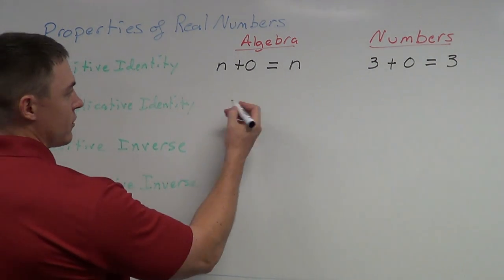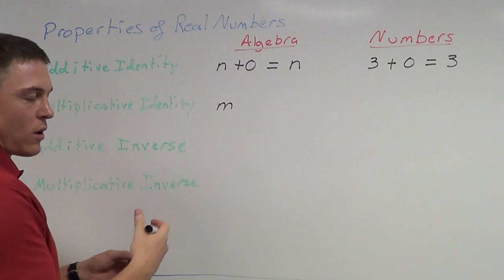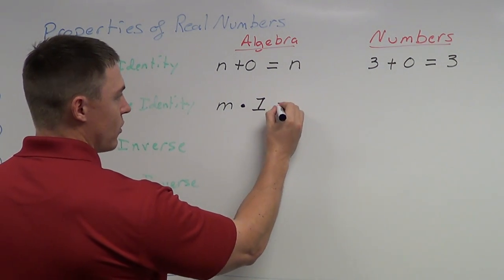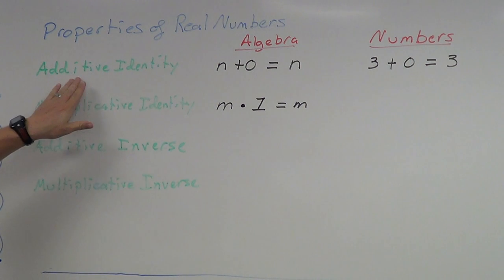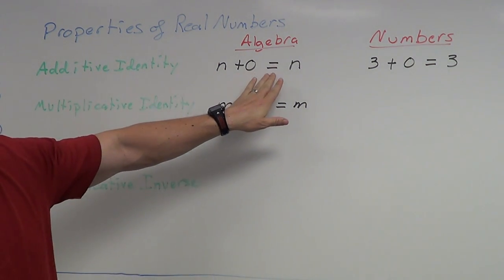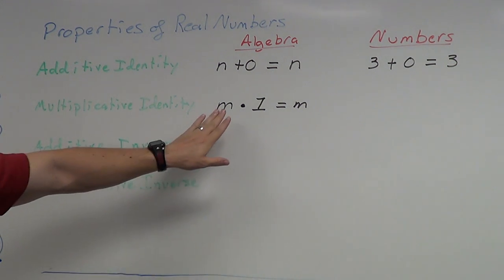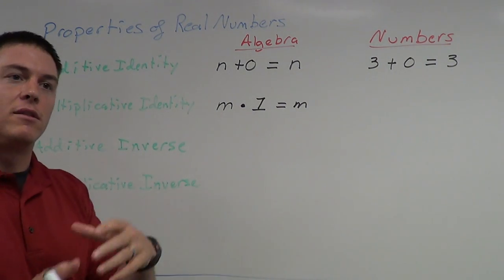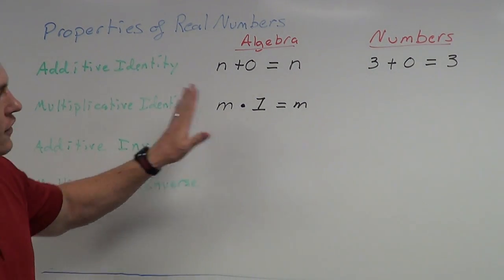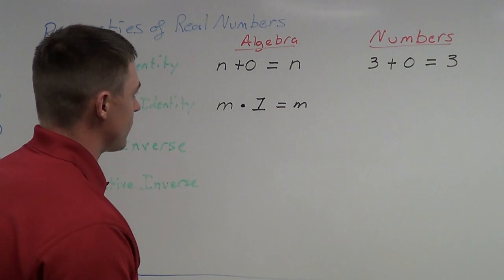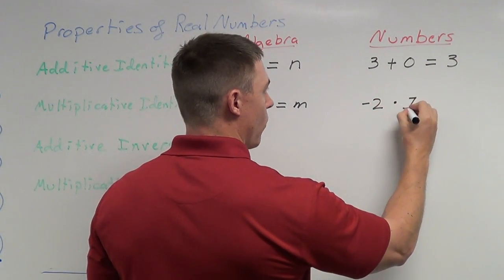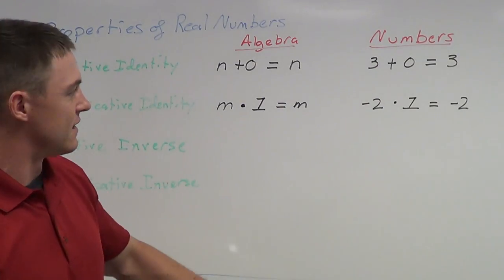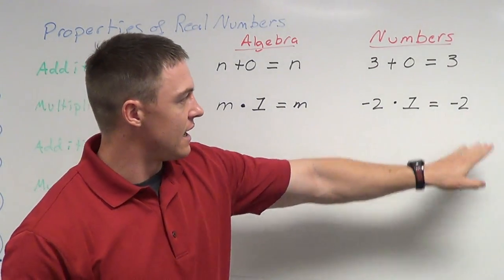For the multiplicative identity, I'll use the variable m. If you take a number and multiply it times one, you get that same number m. So: additive identity — number plus zero equals that number; multiplicative identity — number times one equals that number. For example, negative two times one is simply equal to negative two. Even with negative numbers, multiplying by one gives you the same thing.